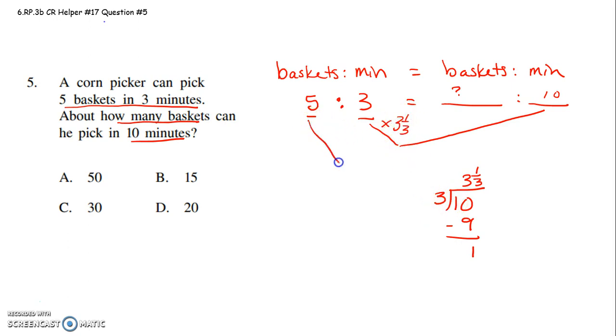So that means I have to take 5 and multiply it by 3 and 1 3rd. So let's go ahead and do that. 5 times 3 and 1 3rd. I can already tell you 15 is the answer. Because they want to know about how many. 5 times 3 is 15. So 5 and 1 3rd is about 15.